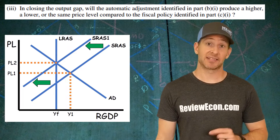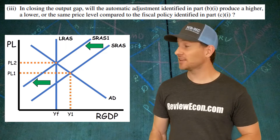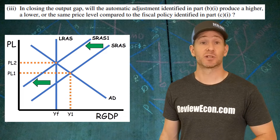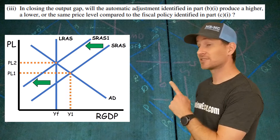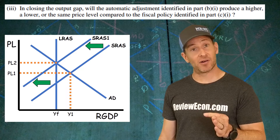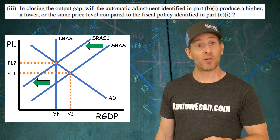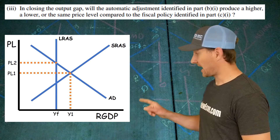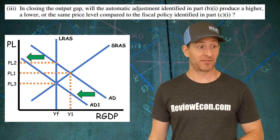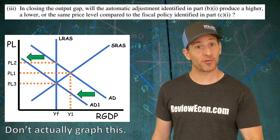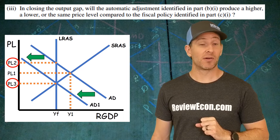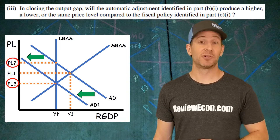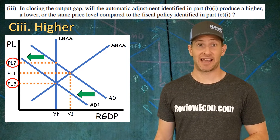Part three of question C is a little bit tricky. We have to compare the price level from the leftward shift of the short-run aggregate supply curve that resulted from an automatic return to long-run equilibrium, labeled P2, versus the price level when there is a discretionary fiscal policy option to close that inflationary gap, which caused a leftward shift of the aggregate demand curve resulting in a price level of P3. Is P2 higher, lower, or equal to P3? P2 is higher. Just say higher and you've got your point.